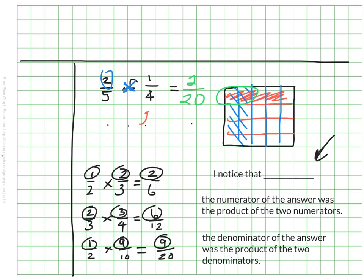I also noticed the denominator in the answer was the product of the two denominators. So two times three is six. Three times four is twelve. And two times ten is twenty.